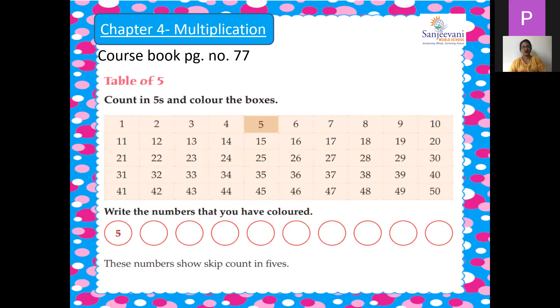Now below that you have table of five. So we will color the boxes of table of five. That is five ones are 5, twos are 10, threes are 15, fours are 20, fives are 25, five sixes are 30, five sevens are 35, five eights are 40, five nines are 45, five tens are 50. And whatever numbers we have colored, we will write in the circle. Now you can just pause the video and you can copy down the answer in your course book page number 77 children.